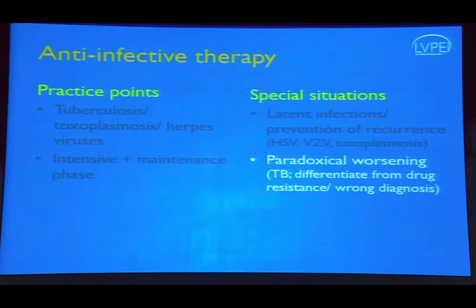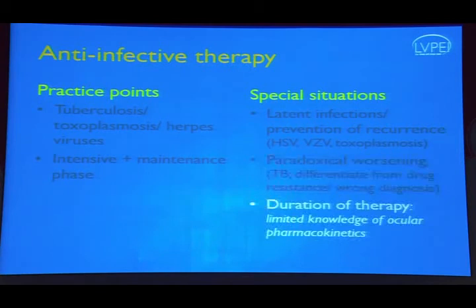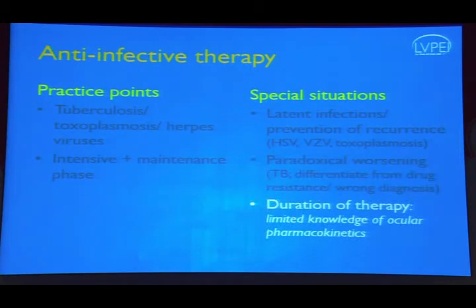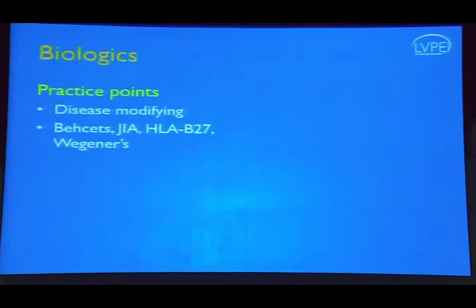The issue of paradoxical worsening, typically seen in tuberculosis, must be differentiated from drug resistance and wrong diagnosis. The duration of therapy is a controversial topic because of limited knowledge of ocular pharmacokinetics.